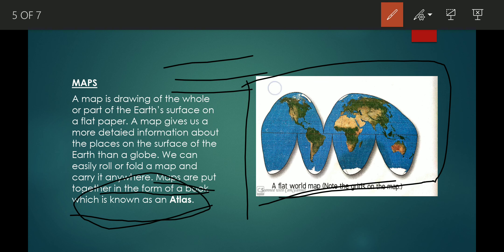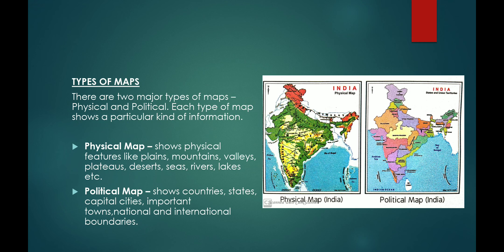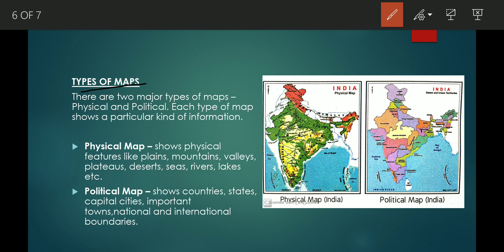Types of maps. There are two types of maps. First is physical and the second is political. Each type of map shows a particular kind of information.